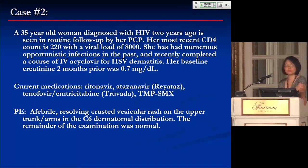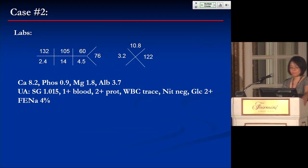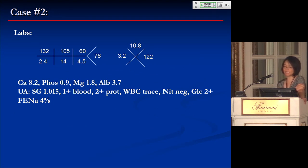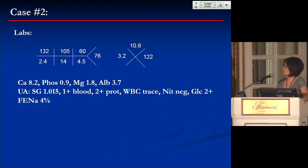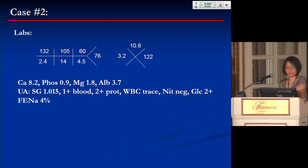On exam, she's afebrile with a resolved encrusted vesicular rash on her upper trunk and arms in a C6 dermatomal distribution. Labs show sodium 132, potassium 2.4, chloride 105, bicarb 14, BUN 60, creatinine 4.5. White count 3.2, hemoglobin 10.8, platelets 122. Calcium 8.2, phosphorus 0.9, mag 1.8, albumin 3.7. Urinalysis: specific gravity 1.015, 1-plus blood, 2-plus protein, trace white cells, nitrate negative, 2-plus glucose, and calculated FENa of 4%.